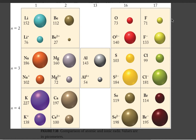Now let's look at the anions. With anions, we're adding extra electrons but we have the same number of protons. Even though oxygen and fluorine also both have neon electron configurations, oxygen has two fewer protons compared to neon, and fluorine has one fewer proton compared to neon, so these two will both be larger than neon.